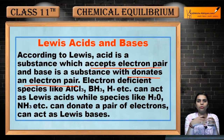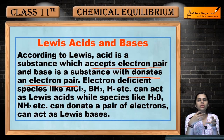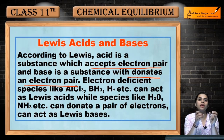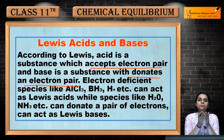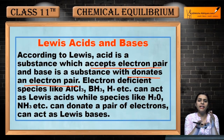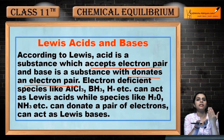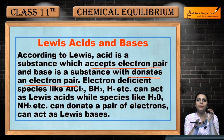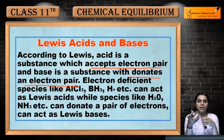Until now, the acid-base definitions we studied were based on proton exchange — proton is donated or proton is accepted, H⁺ or OH⁻. Now in Lewis theory, what happens is: acid is that which accepts an electron pair — it is electron deficient — and base is that which donates an electron pair.